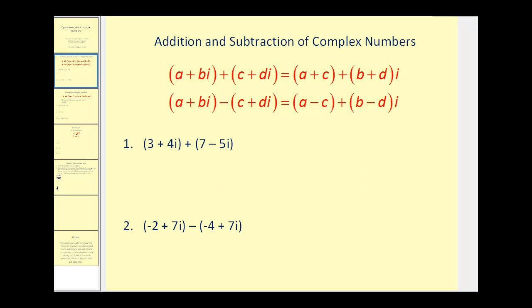We'll start off by talking about adding and subtracting complex numbers. If you take a look at the rule for adding and subtracting complex numbers, it looks like there's a lot going on, but really it's pretty much the same as combining like terms. Each complex number has a real part and an imaginary part. If you're adding two complex numbers, you add the real parts together, and then you add the imaginary parts together. And if we have a difference of complex numbers, we find the difference of the real parts and the difference of the imaginary parts.